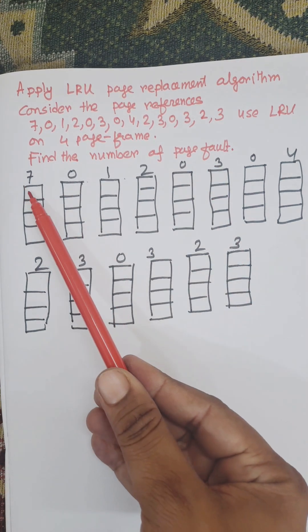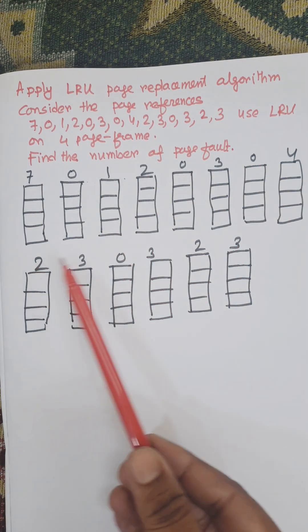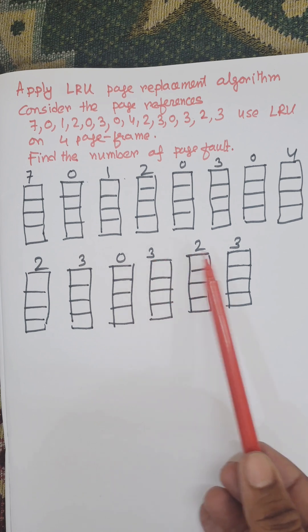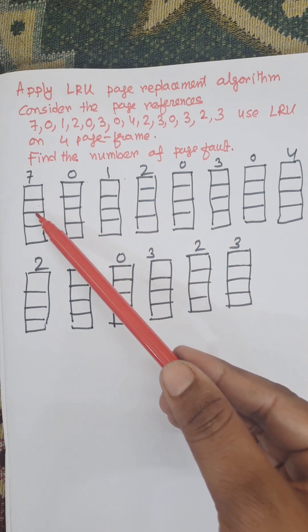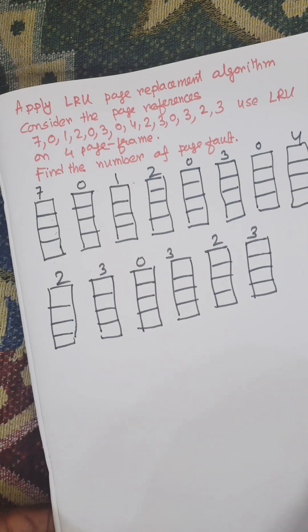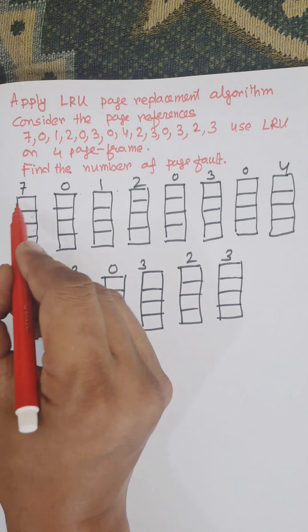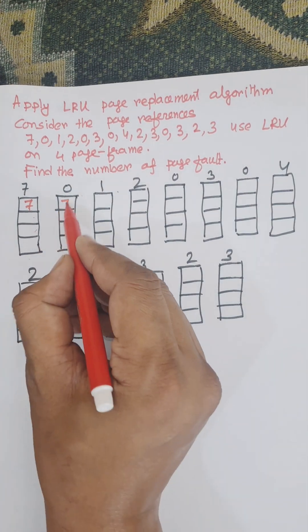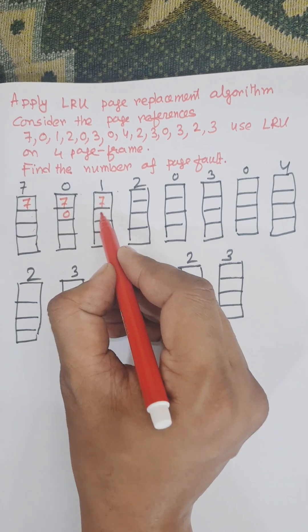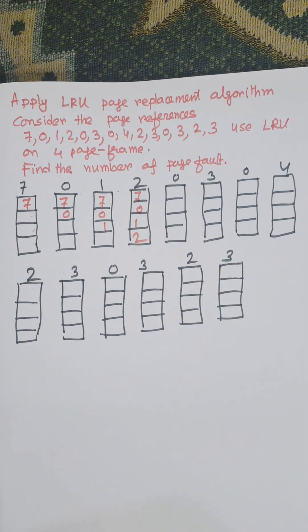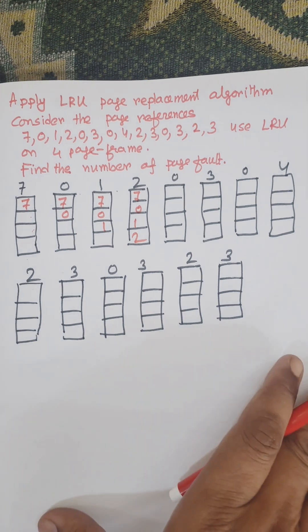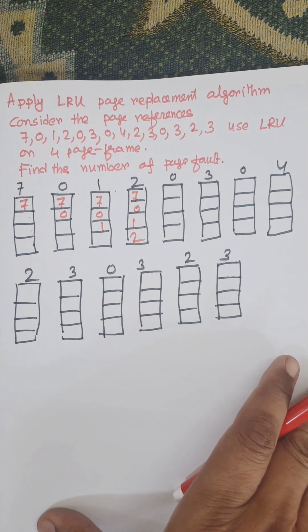First, we draw all the page references: 7, 0, 1, 2, 0, 3, 0, 4, 2, 3, 0, 3, 2, 3. For each reference, we need four page frames. First, 7 is inserted, then 0, then 1, then 2. These are page faults as they need to be brought from secondary memory to main memory, also known as misses.